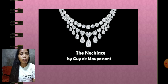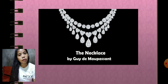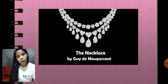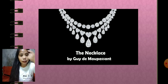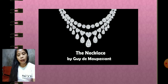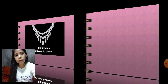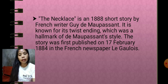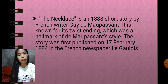If Mathilde had been honest from the beginning and told Jeanne she lost the necklace, they would not have suffered for 10 years paying off debt. When she finally found out that the lost necklace was fake all along, she was devastated. 'The Necklace' is an 1884 short story by Guy de Maupassant, known for its twist ending — a hallmark of Maupassant's style. It was first published on February 17, 1884, in the French newspaper Le Gaulois.